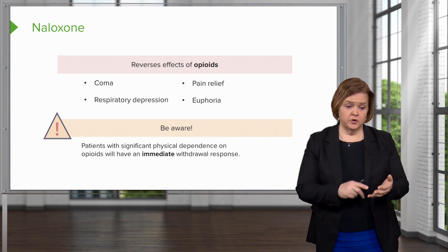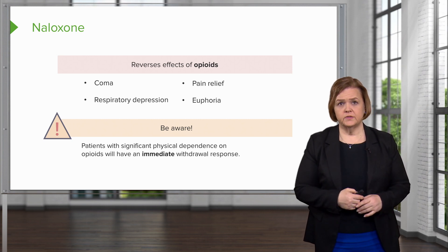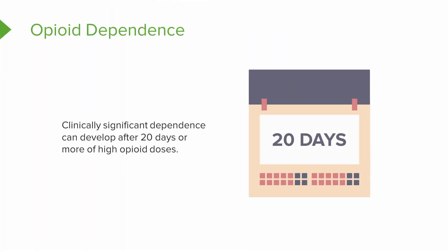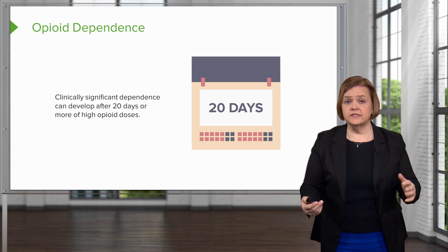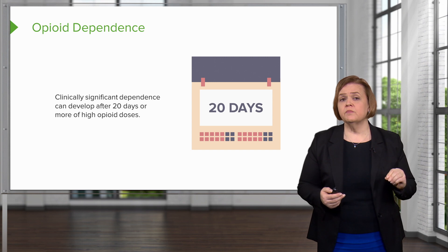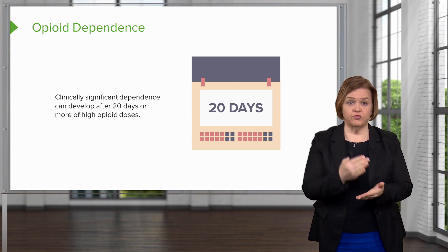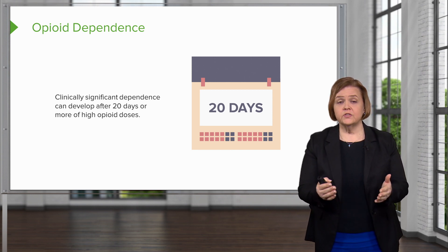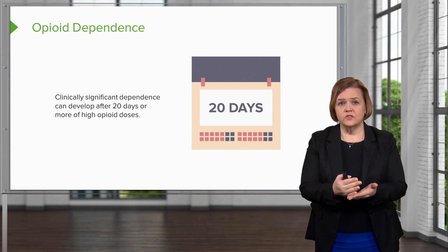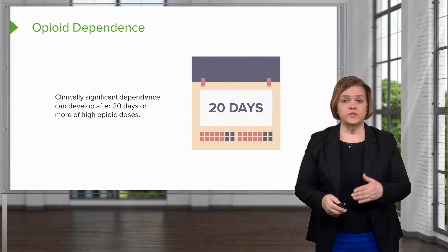There is nothing fun about withdrawal responses. If a patient had been on opioids — whether prescription or abusing them — we would gradually wean those down to avoid withdrawal symptoms. Clinically significant dependence can develop after just 20 days or more of high opioid doses. That's why it's so important to wean the medication down instead of abruptly discontinuing it, giving gradually lower and smaller doses over a longer period of time.